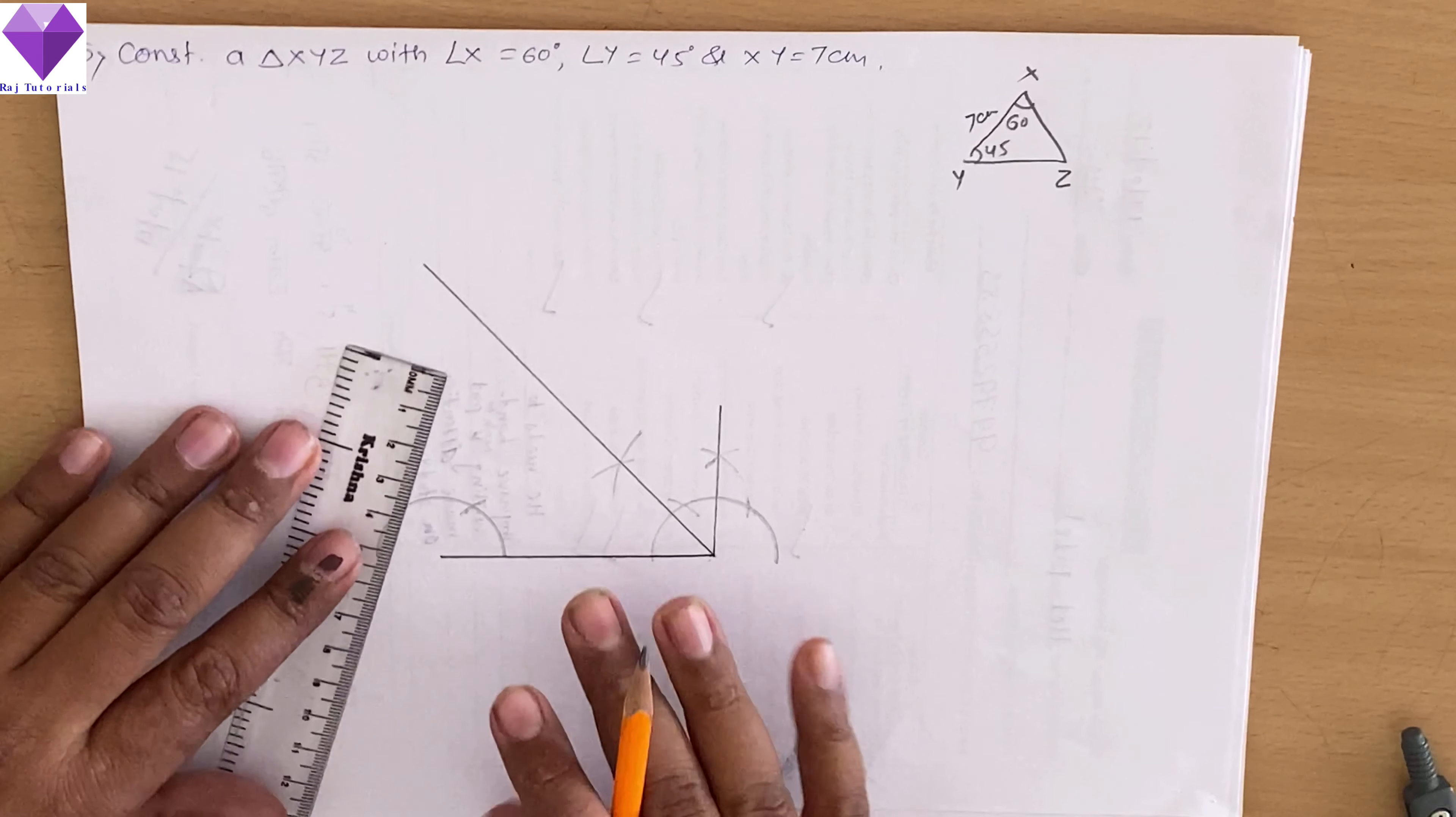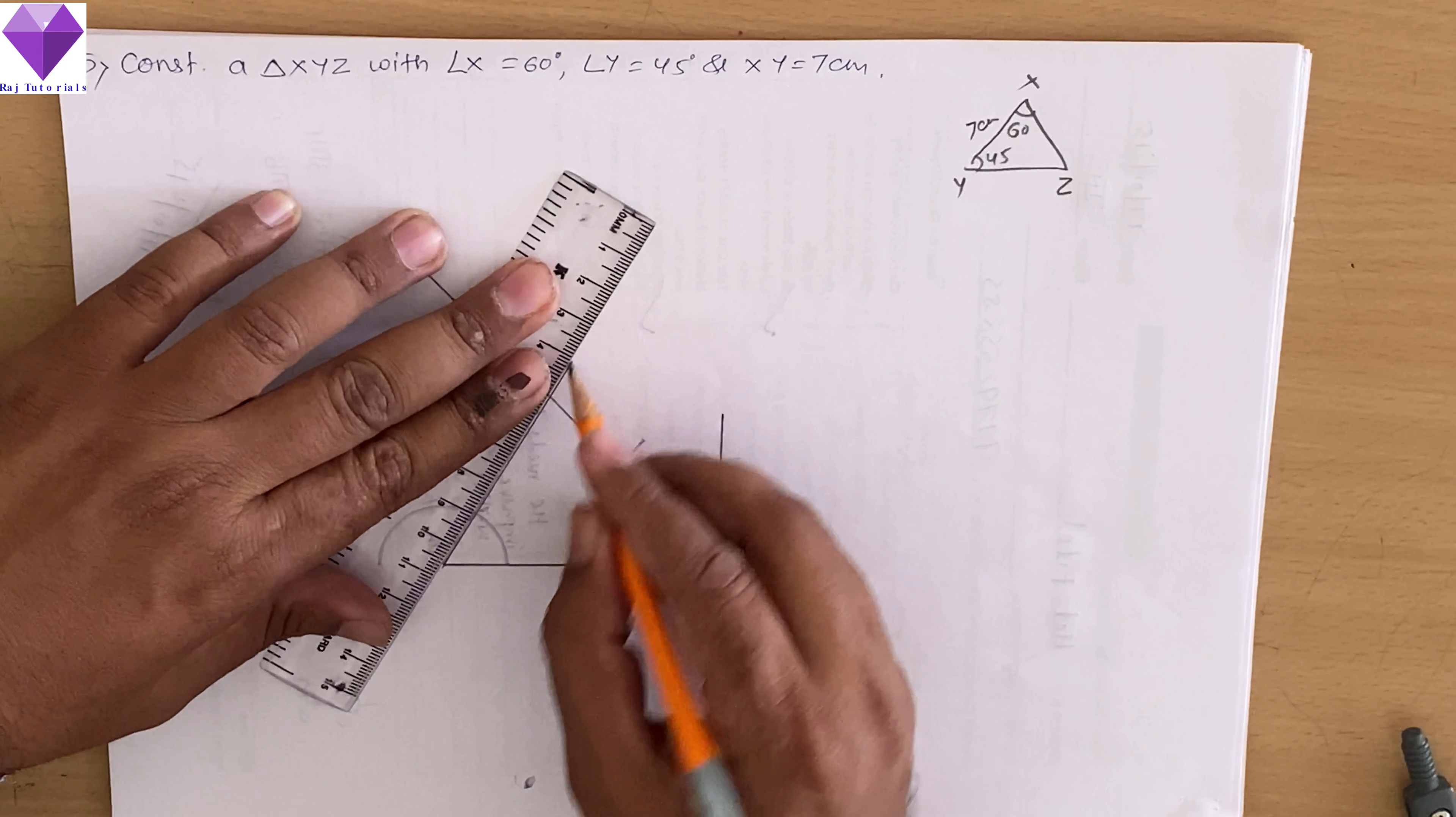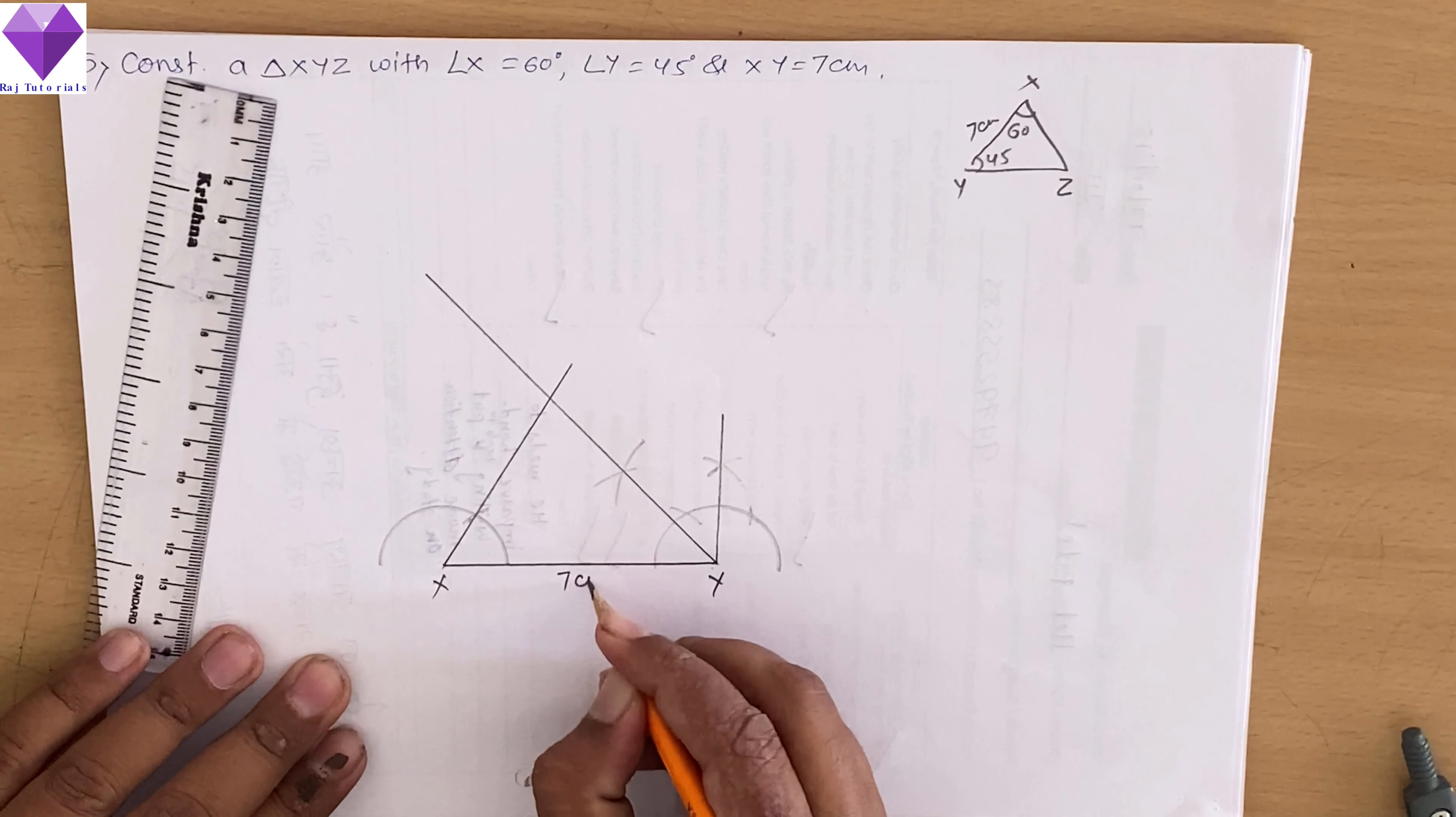Now I will be joining this 45 degree and elongating. And this side it is 60 degree. So I will be elongating that also. So I have got my triangle XY as 7 cm.